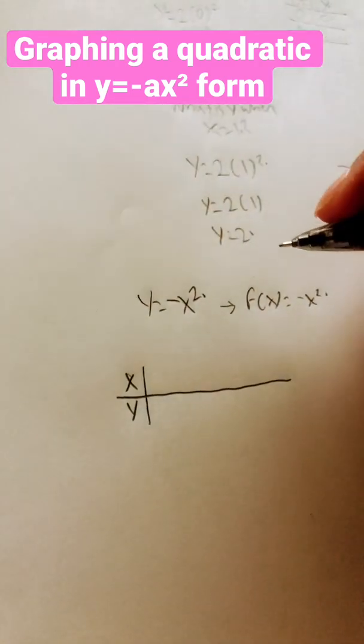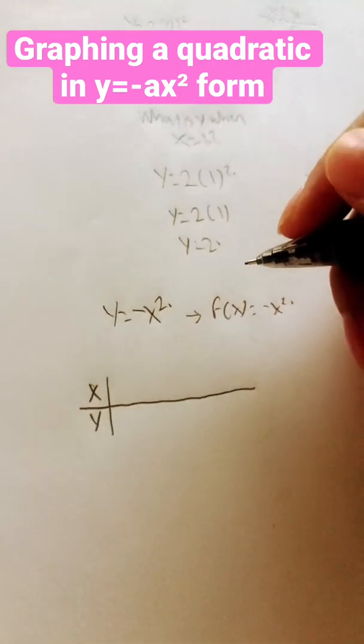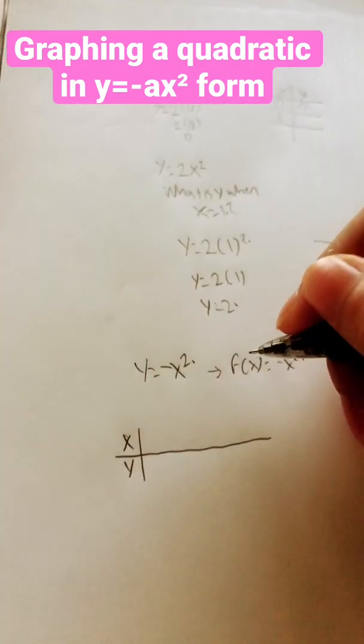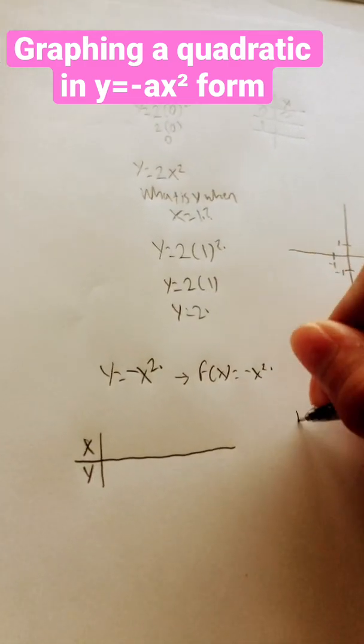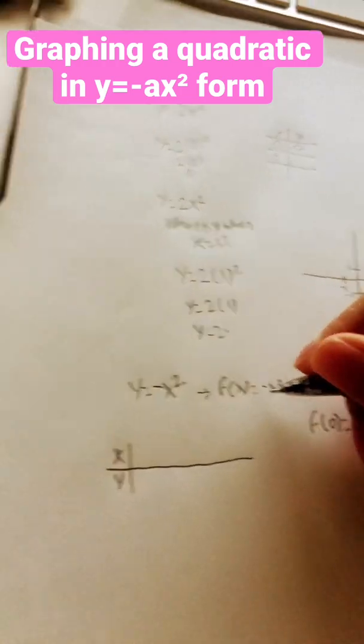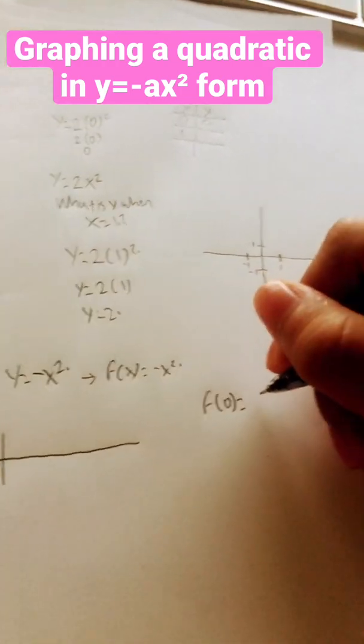So what I would do is I would make an xy table. So when x equals 0, if I say f of 0 and then I plug in 0 for x, what is gonna be y?